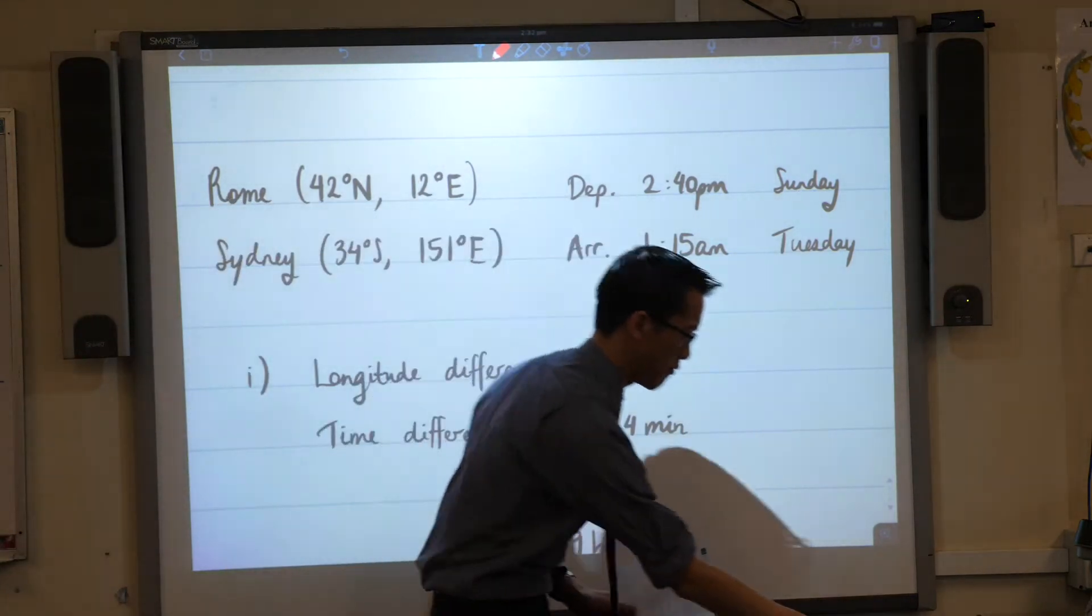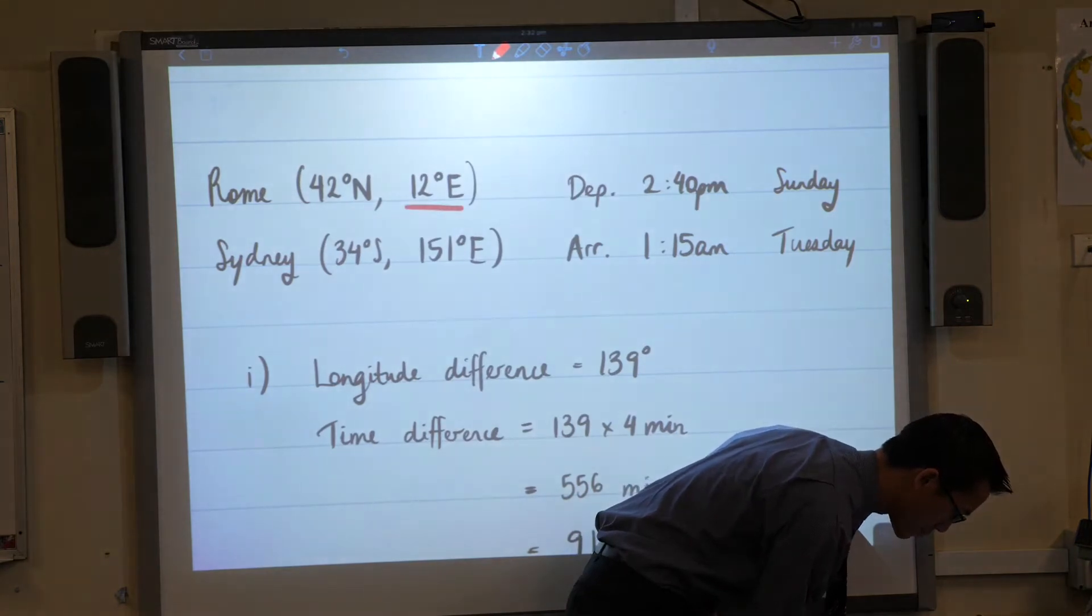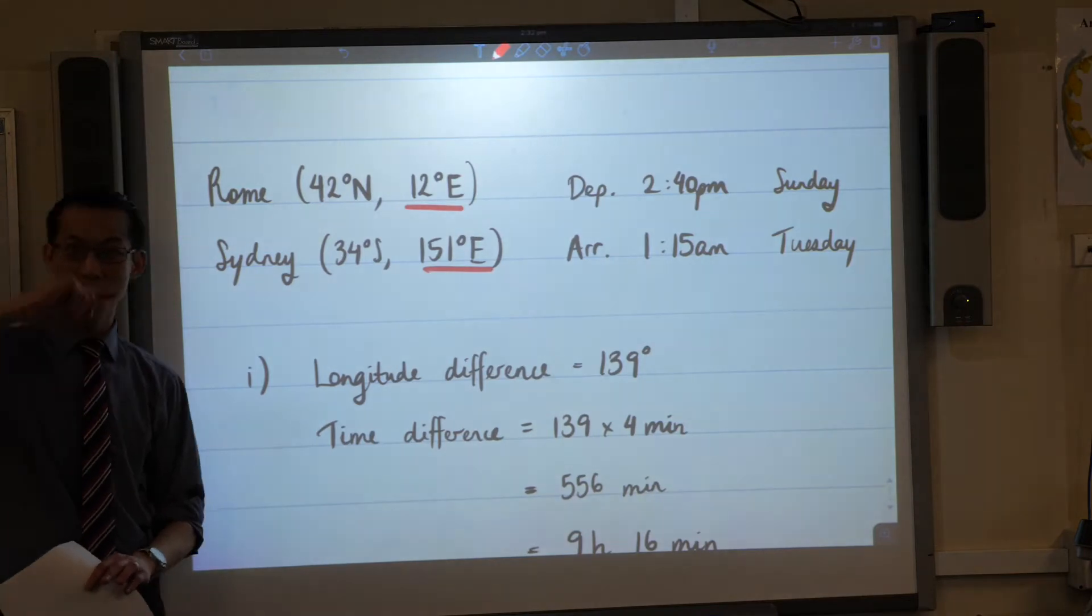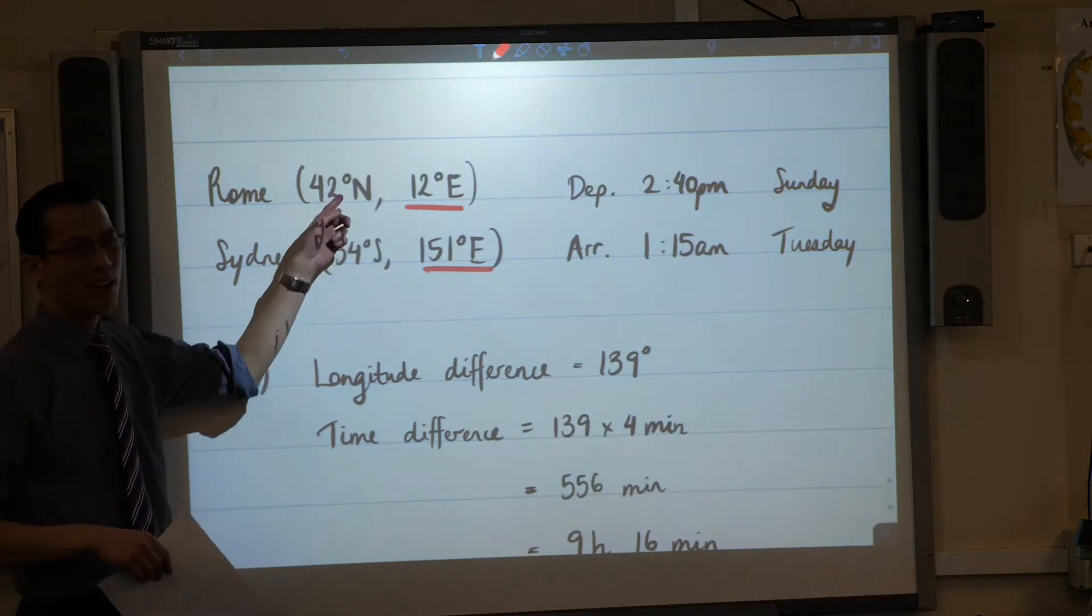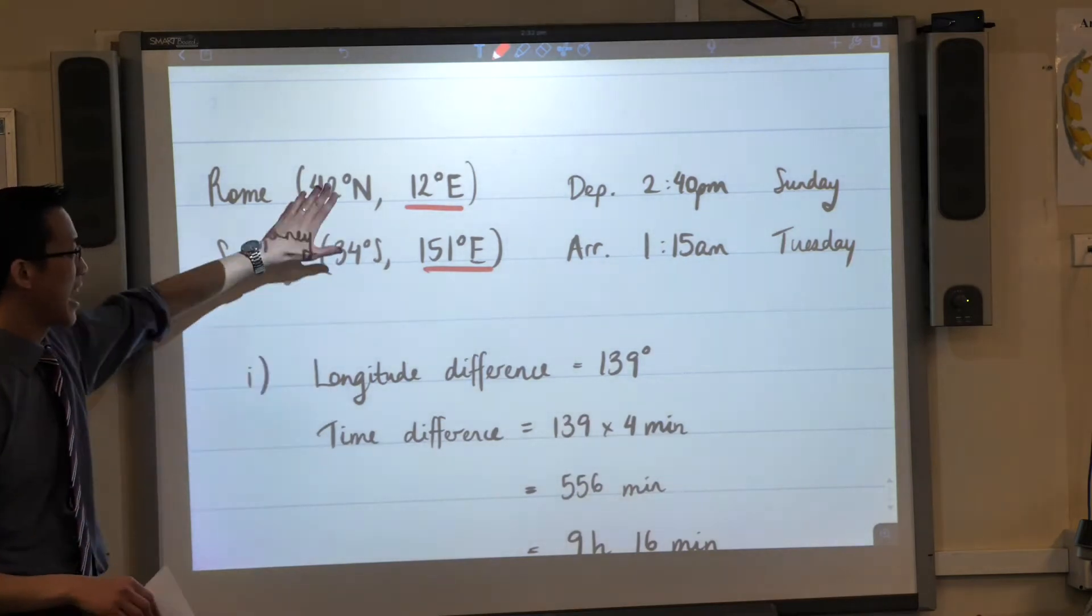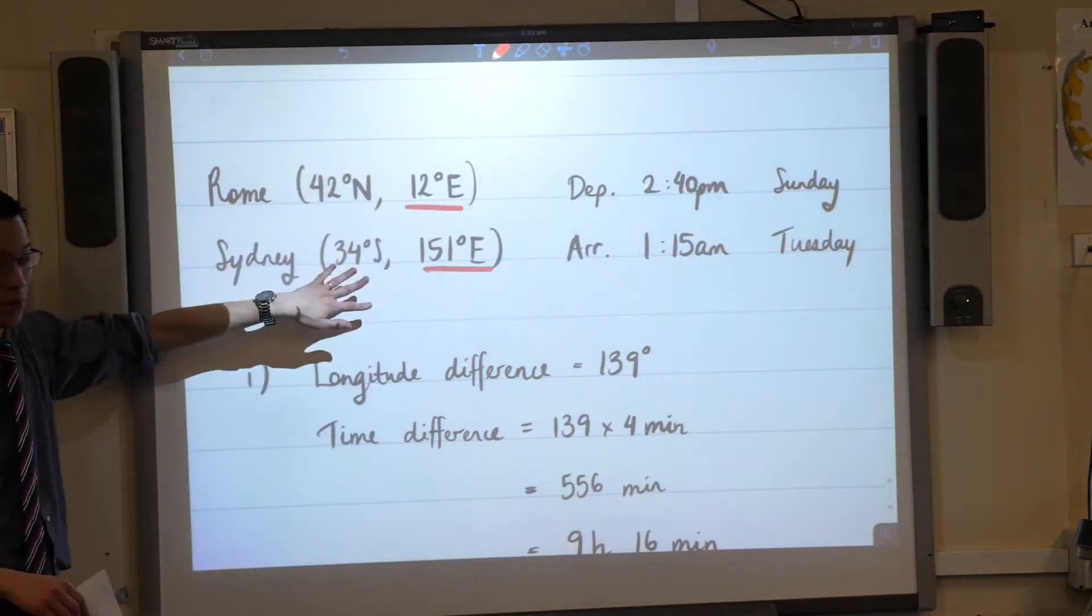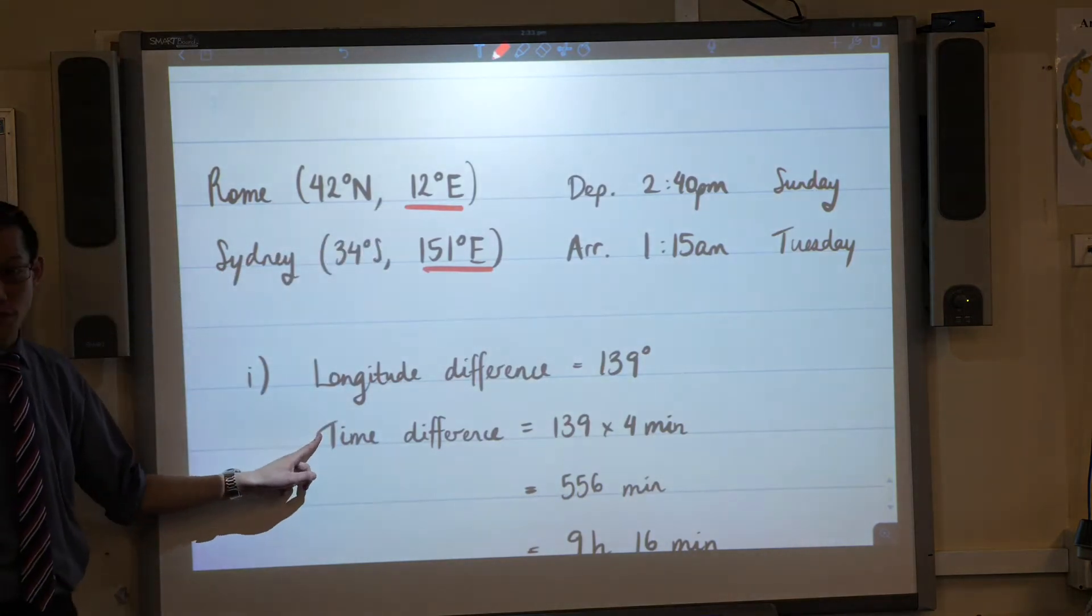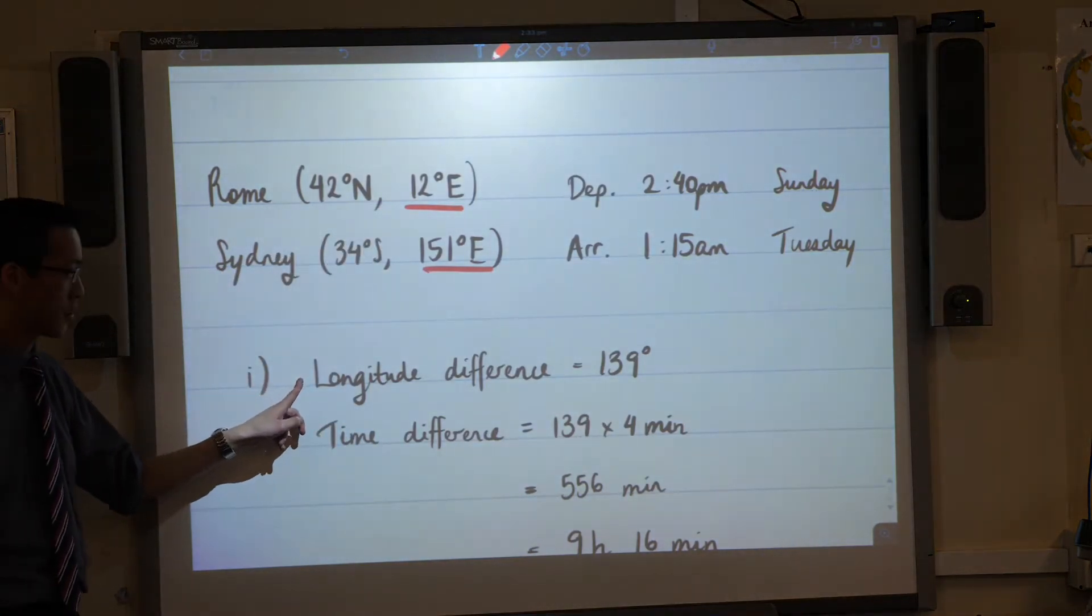Only longitude. We know that if you've got two places on the same meridian of longitude, it doesn't matter how far north or south you are of the equator, they'll be the same time. So I can actually ignore these for the rest of the question. In order to work out a time difference, I first have to work out a longitude difference.